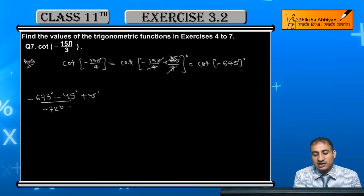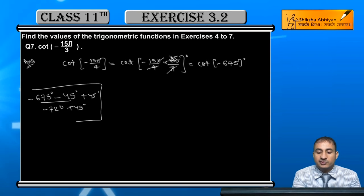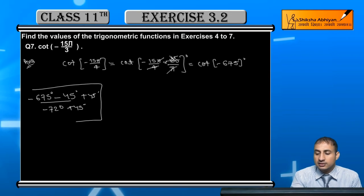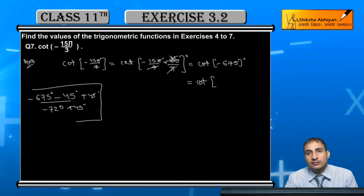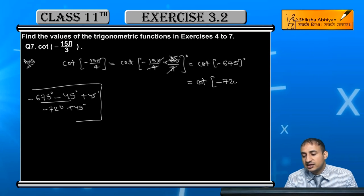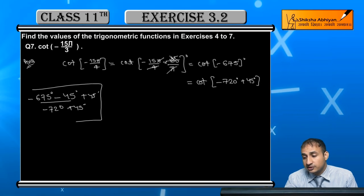So in this way, I will write the same. So further, this value of cot is cot minus 720 degrees plus 45 degrees.